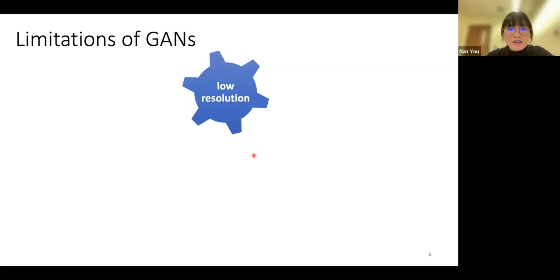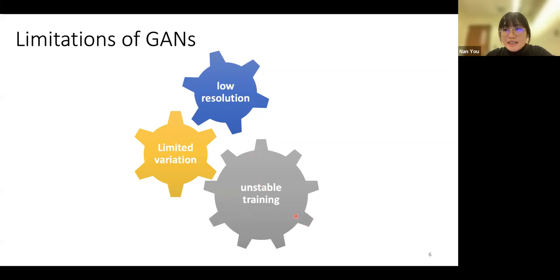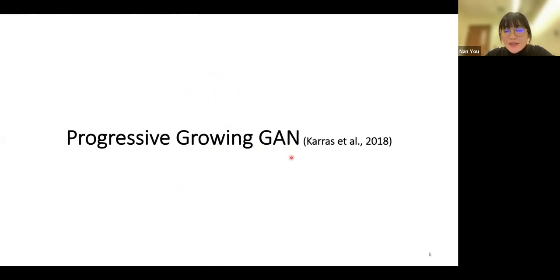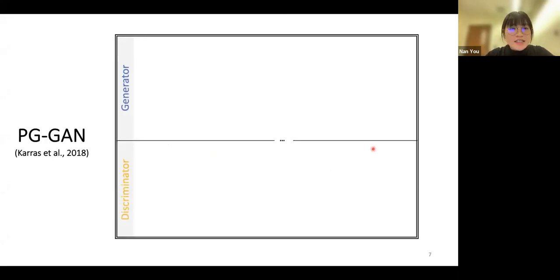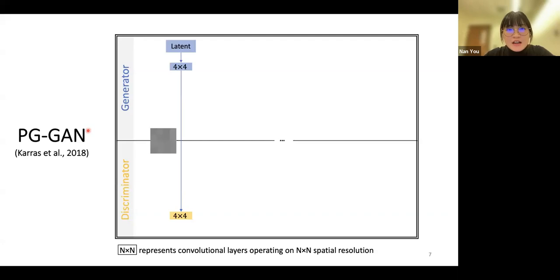Despite the popularity of GANs, they have some limitations — like resolution and limited variation of generated images, and the training process is not very stable. Progressive Growing GAN (PGGAN) was proposed to conquer those limitations by Karras in 2018. The training starts with low resolution images of 4×4 — the generator generates low resolution images first, and real images are downscaled to match this current resolution of 4×4 by average pooling.